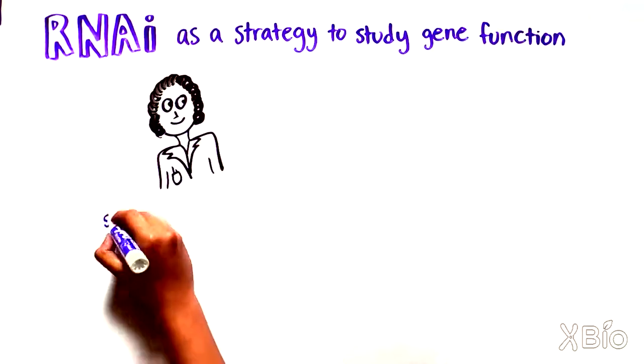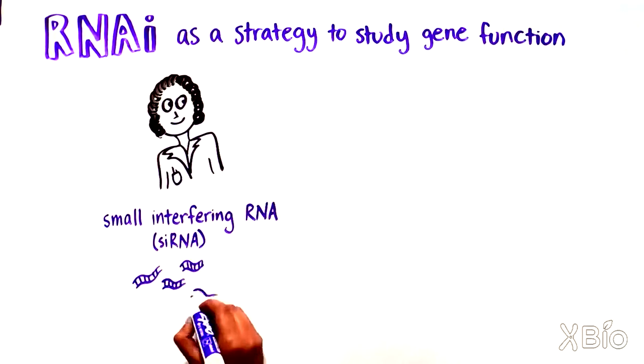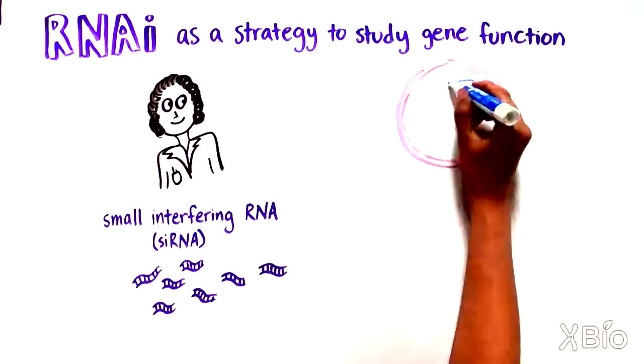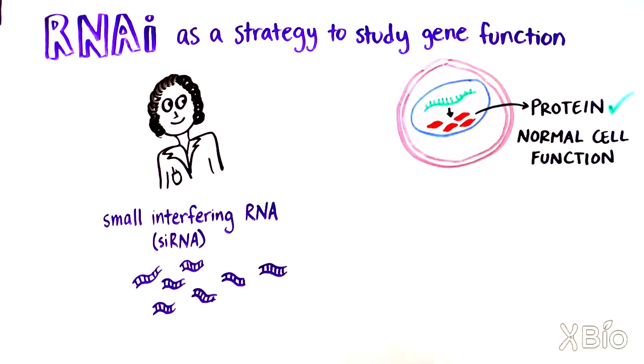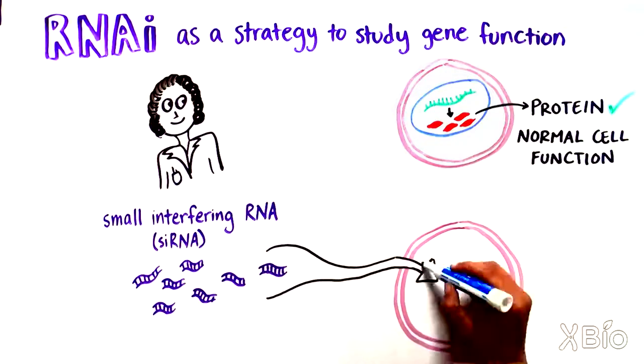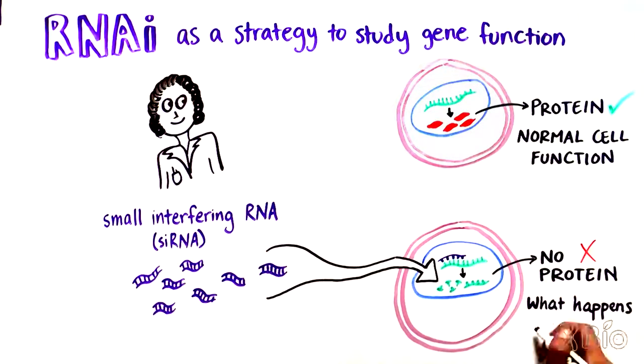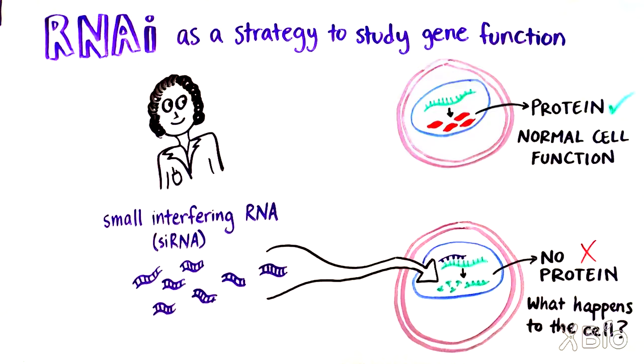For example, scientists can use small interfering RNAs or siRNAs, a type of RNAi technology, to pair with and degrade a natural RNA in the cell. Doing so allows researchers to identify the role of a specific protein by studying the cellular outcomes in its absence.